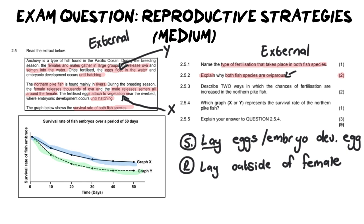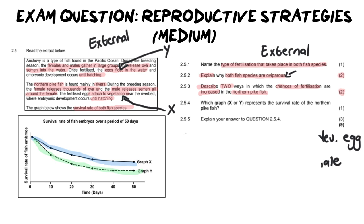Moving on to our next question, it says, describe two ways in which the chances of fertilization are increased in the northern pike fish. This is a lovely question for two marks, and it is a describe question, which means what you're going to do is very similarly to explain. You can give a statement and a reason, but generally describe questions require you to, as the word suggests, describe what you are talking about. If we have a look at one of our first reasons, we are going to bring our attention to the fact that it says during the breeding season the female releases thousands of eggs. That's going to be our first point. And remember, this question is focusing on fertilization.